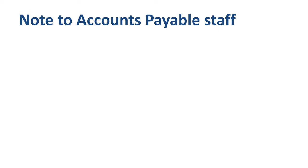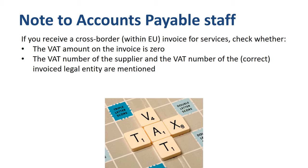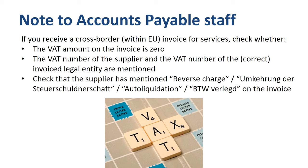Here's what your accounts payable staff should look out for when receiving reverse charge VAT invoices. The VAT amount on the invoice should be zero. The VAT number of the supplier and the VAT number of the correct invoiced legal entity should be mentioned. The supplier should mention reverse charge in English, Umkehrung der Steuerschuldnerschaft in German, Autoliquidation in French, or Btw Verlegd in Dutch on the invoice.